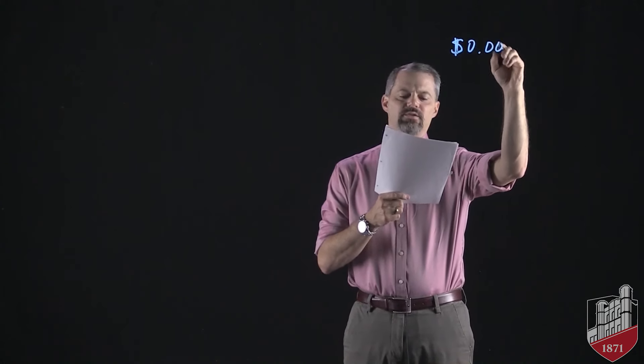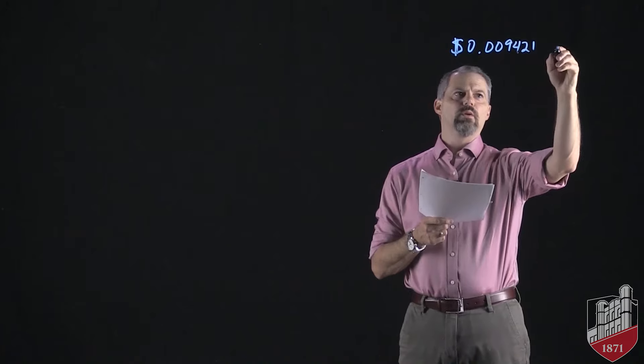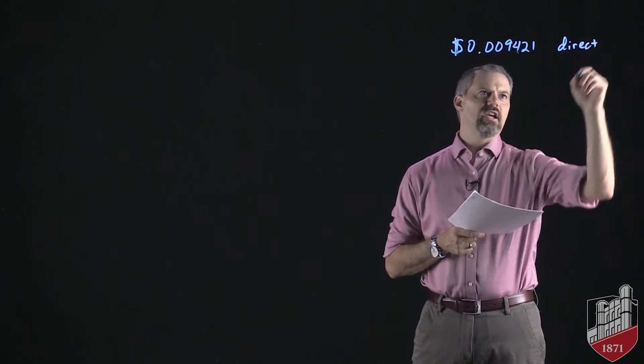We can think about an exchange rate in terms of either currency — our reference currency will be the dollar. For the dollar versus the yen, we could think about the number of dollars it costs to buy one yen, which would be 0.009421. That would be to purchase one yen, and this is what we call direct terms — how much of your currency you have to give up to buy the other currency.